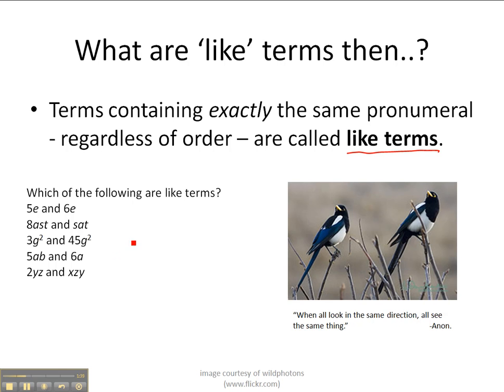Let's have a bit of a practice. Which of the following are like terms? Now 5e and 6e, they have different coefficients, the 5 and 6 are different, but they have the same pronumeral. It's exactly the same pronumeral. So this is a like term.